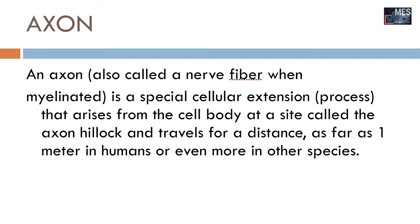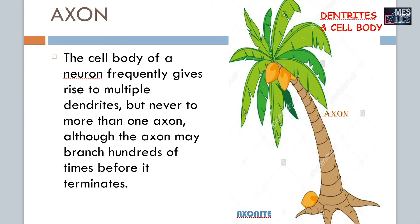An axon is a special cellular extension that arises from the cell body at a site called the axon hillock and travels for a distance as far as 1 meter in humans or even more in other species. Just imagine the height of a giraffe — the length of an axon can be longer than 1 meter in such cases. The cell body of a neuron frequently gives rise to multiple dendrites but never to more than one axon, although the axon may branch hundreds of times before it terminates. This clearly shows how it is equivalent to a coconut tree.